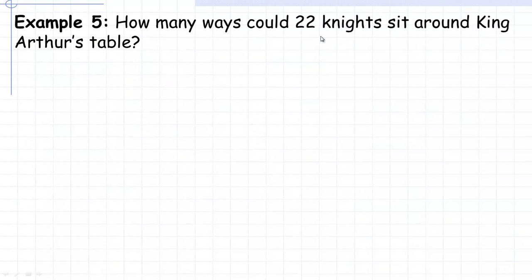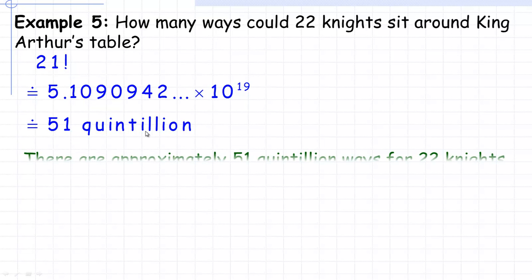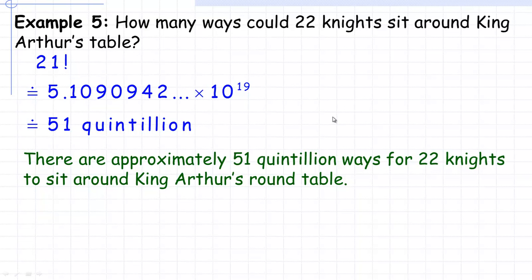One last example: how many ways could 22 knights sit around King Arthur's round table? This is a circular permutation with 22 objects, so we evaluate 21 factorial — one less than the number of objects. 21 factorial is a very large number. If you punch it into a calculator, you get approximately 5.109 times 10 to the power of 19, which is approximately 51 quintillion. So there are approximately 51 quintillion ways for 22 knights to sit around King Arthur's round table. And that's the end of the tutorial.